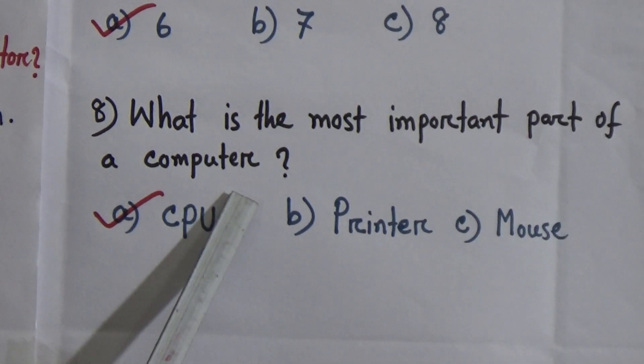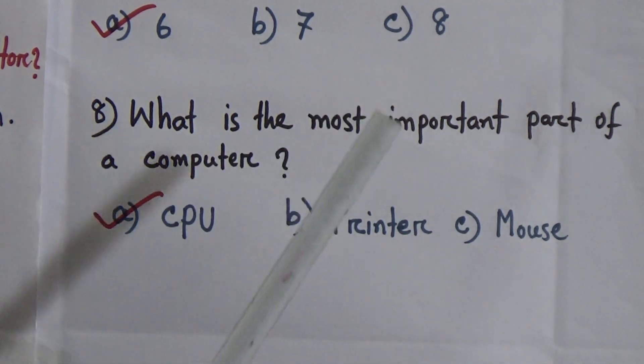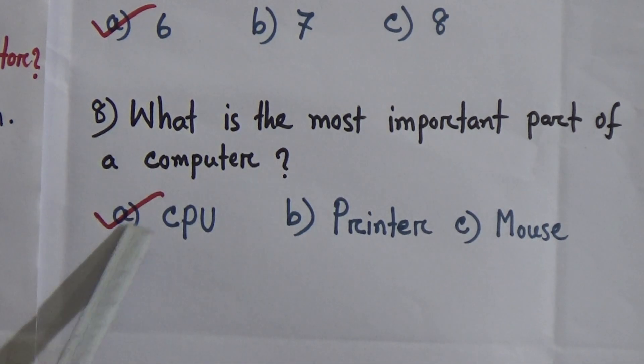8. What is the most important part of a computer? CPU is the most important part of a computer. A: CPU, central processing unit. B: printer. C: mouse. So, the correct answer is CPU. Central processing unit is the most important part of a computer.